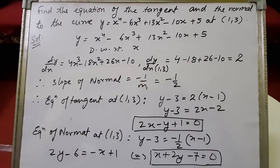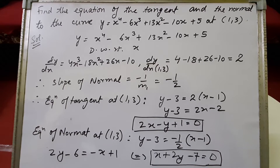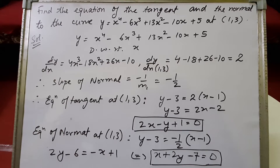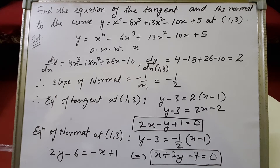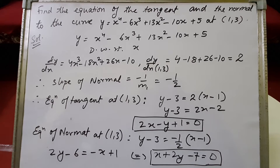Children, today we will be discussing more sums from the second exercise of the chapter Application of Derivatives. This exercise is based on finding the equation and the slope of the tangent and the normal. We have discussed the formulas of the slope and the equation in the previous class. Let's continue with the sums so that we could understand the topic.